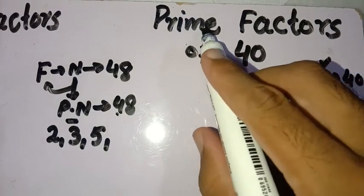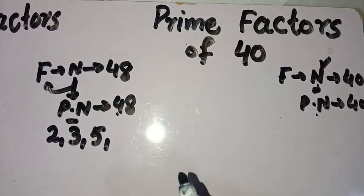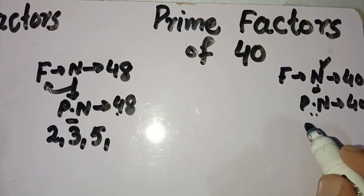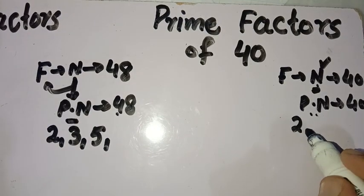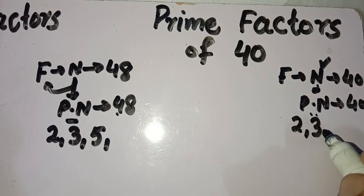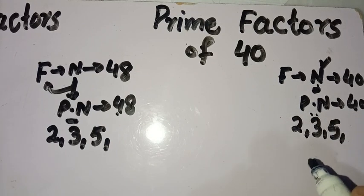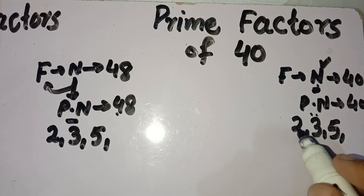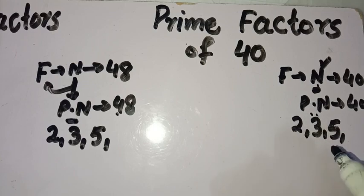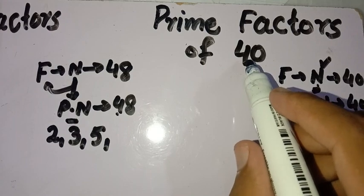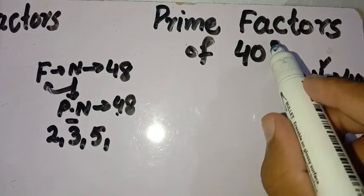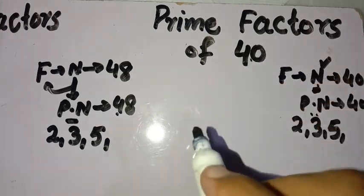If that number is also a prime number and it divides 40, then it is called a prime factor. A prime number is a number which is divisible by only 1 and itself. For example: 2, 3, 5, and 7 are prime numbers. Now, how to find the prime factors and factors of 40.